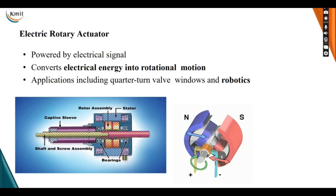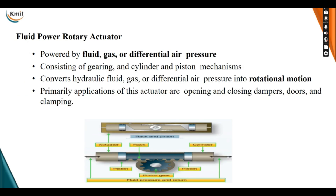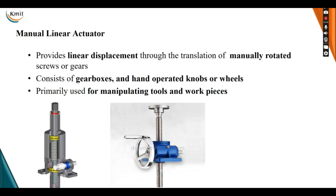Electric rotatory actuators are powered by electrical signals and convert electrical energy into rotatory motion. Applications include quarter-turn valves, windows, and robotics. Fluid power rotatory actuators are powered by fluid, gas, or differential air pressure and convert hydraulic fluid, gas, or differential air pressure into rotational motion. Primary applications include opening and closing of dampers, doors, and clamping. Finally, manual linear actuators provide linear displacements through the translation of manual rotatory screw mechanisms.